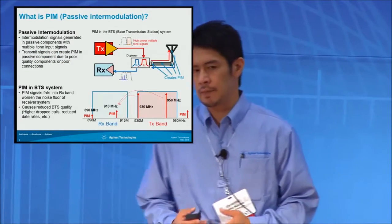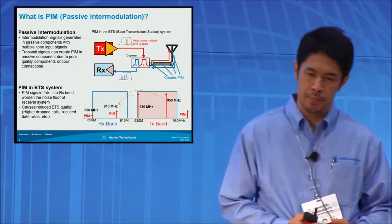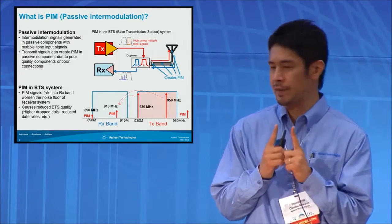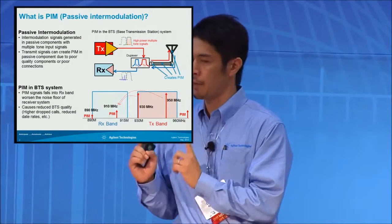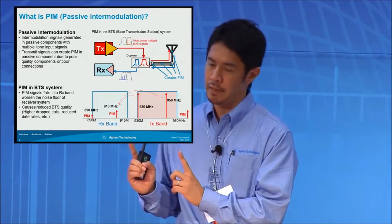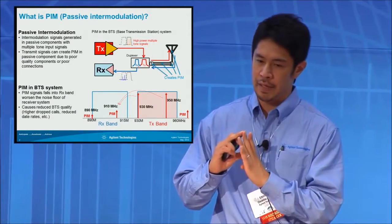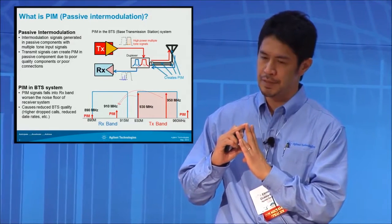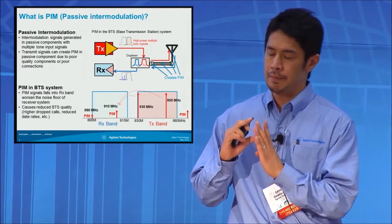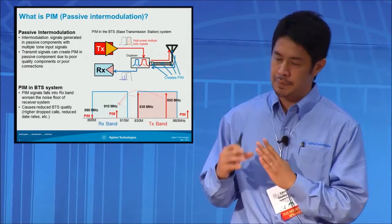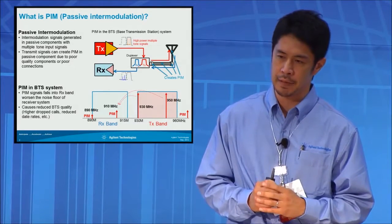Let me talk a little bit about PIM — passive intermodulation. If you put two tones to an active device, it can create intermodulation signals. Usually it is an active device that creates intermodulation signals. However, it is possible to create intermodulation with a passive device as well.